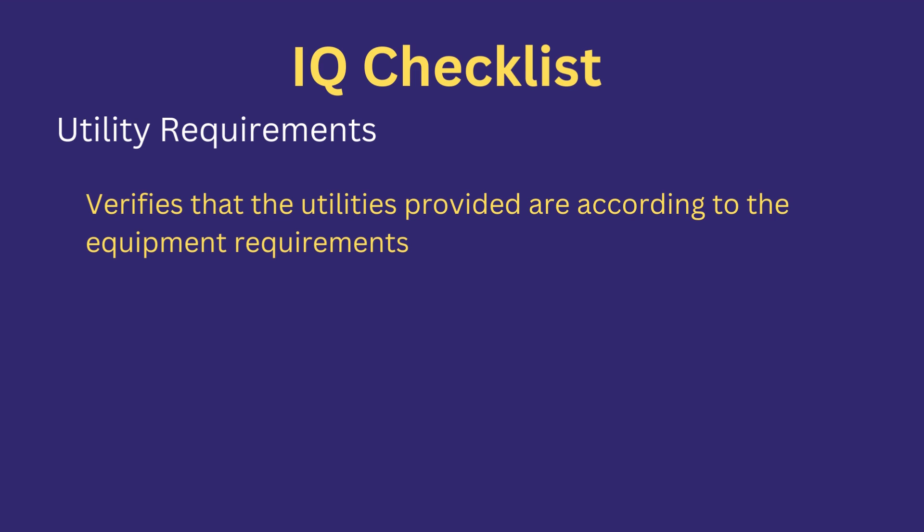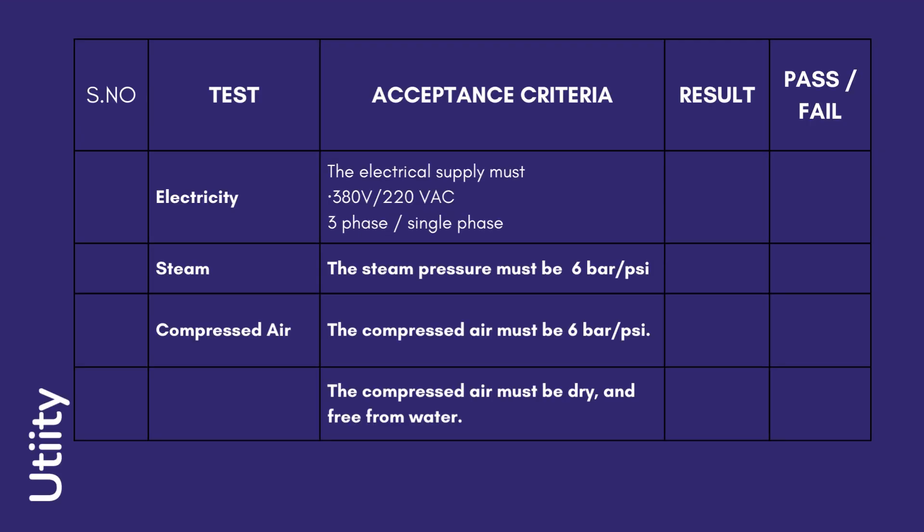Utility requirements: this test verifies the utilities required by the equipment and ensures that adequate utilities are provided as per the equipment's needs. Some common tests include: Electricity — acceptance criteria could be 380 volts or 220 volt AC, single phase. Steam — must be 6 bar or psi. Compressed air — the compressed air must be 6 bar or psi.